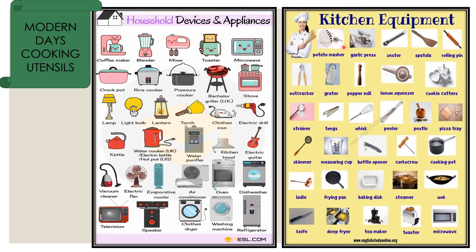And let's look at the kitchen equipment. This is potato measure, garlic press, zester, spatula, rolling pin, nutcracker, grater. There are many pieces of equipment and we use all of these in the modern days.